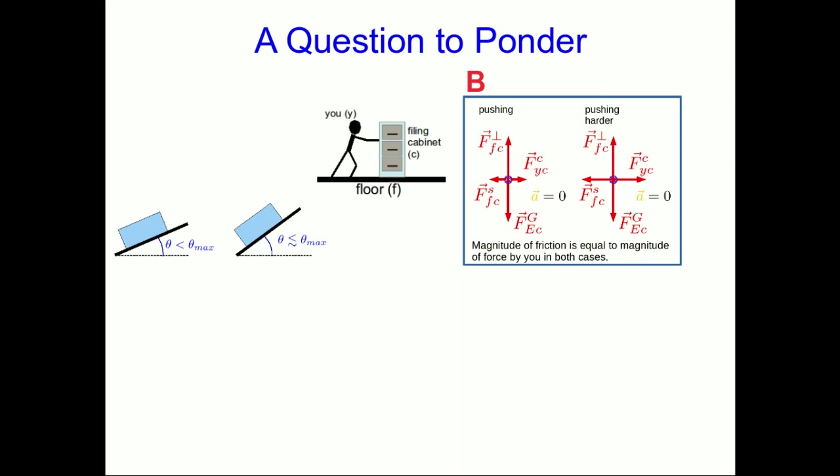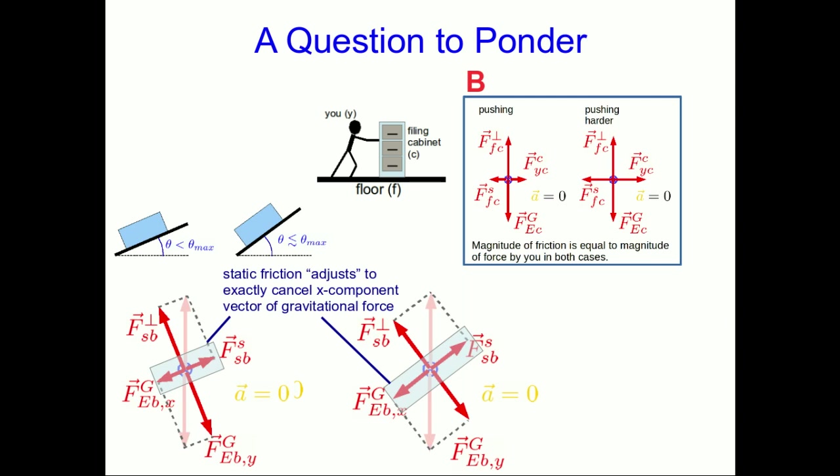It's exactly the same as the situation we were seeing with the block on the incline. As we increase the slope of the incline and the size of the component vector of gravity pointing down the slope increases,